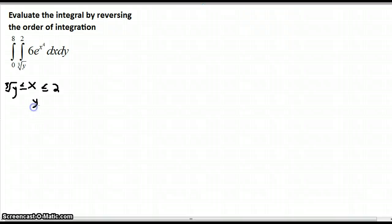We have x's between on the low end the cube root of y and on the high end 2. y is between 0 and 8 and so the one curve is x equals the cube root of y. If x equals the cube root of y, cube both sides, y is x cubed. That's how we're more familiar looking at the curve, so that's the curve y equals x cubed. Let's go ahead and graph these two guys.